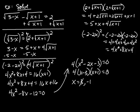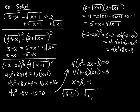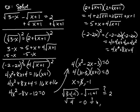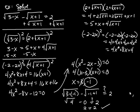Checking x equals negative 1 in the original: the square root of (3 minus negative 1) minus the square root of (negative 1 plus 1) equals the square root of 4 minus the square root of 0, which is 2 minus 0 equals 2. The left-hand side equals the right-hand side, so negative 1 is a valid solution — not extraneous. The key to solving radical equations with two radicals is isolating the radicals one at a time and then squaring to remove each radical. Until next time.